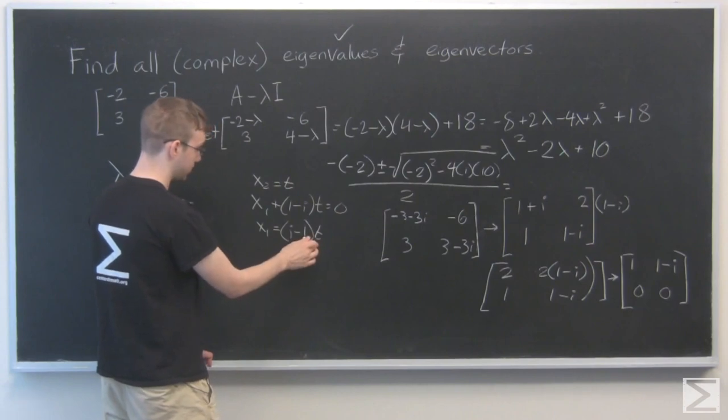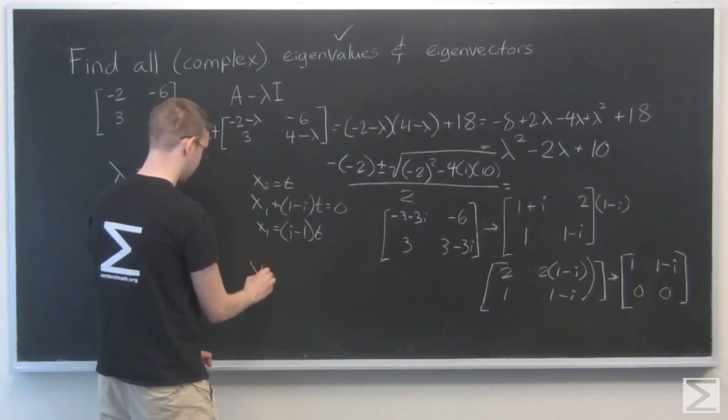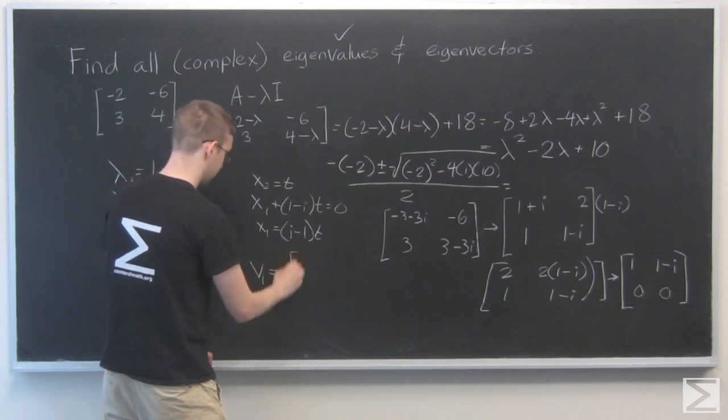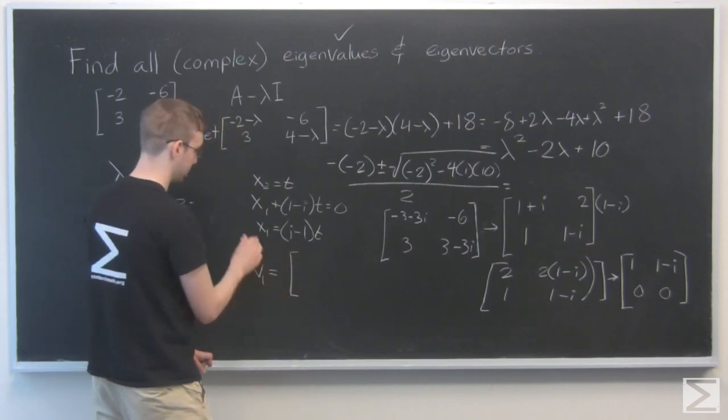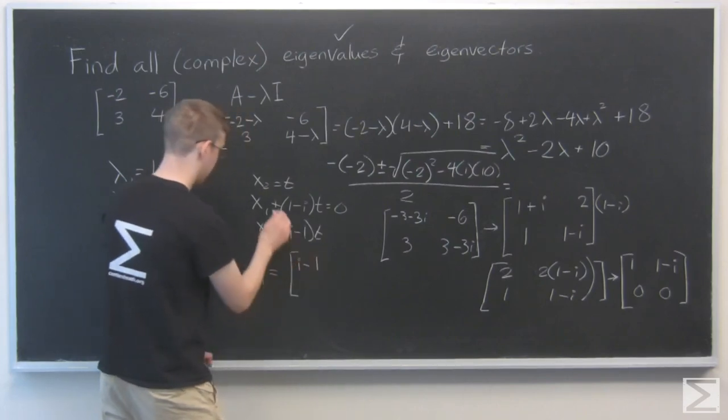So choosing t to equal 1, we can choose whatever we want for that. I'm going to choose 1. We can say that vector 1, eigenvector 1, is equal to i minus 1 and 1.